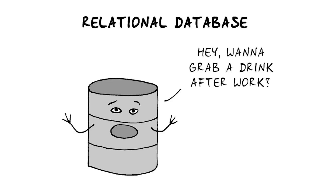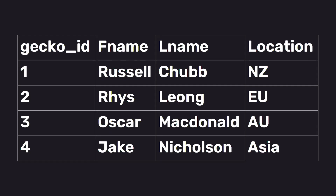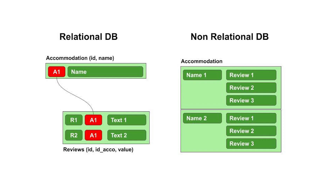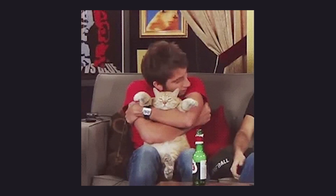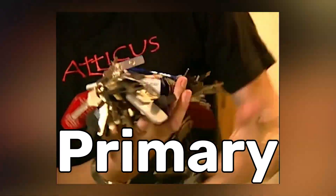SQL operates on relational databases, which store data in tables composed of rows and columns. Columns represent the different attributes or fields of the data, while rows represent individual records. A relational database stores data in tables that can be related to each other, and this relationship is established through keys — both primary and foreign.